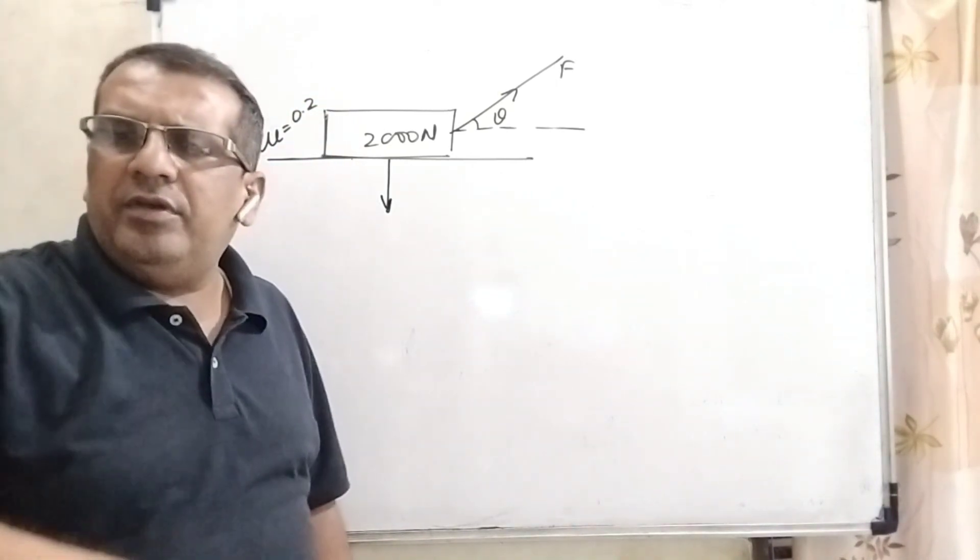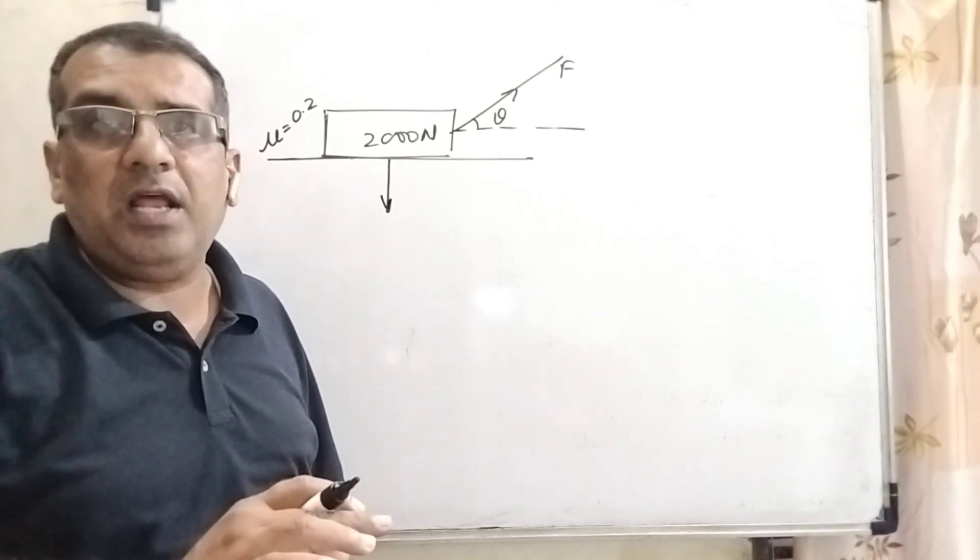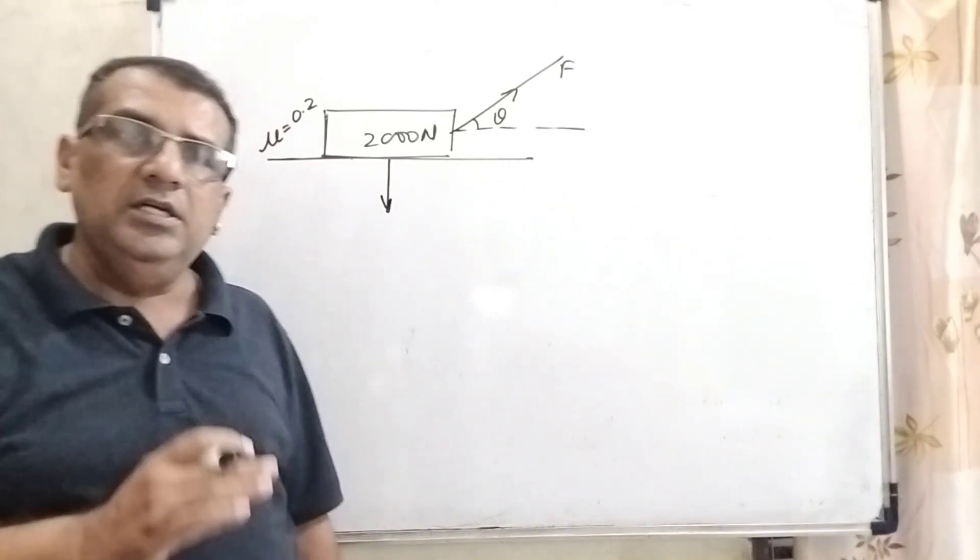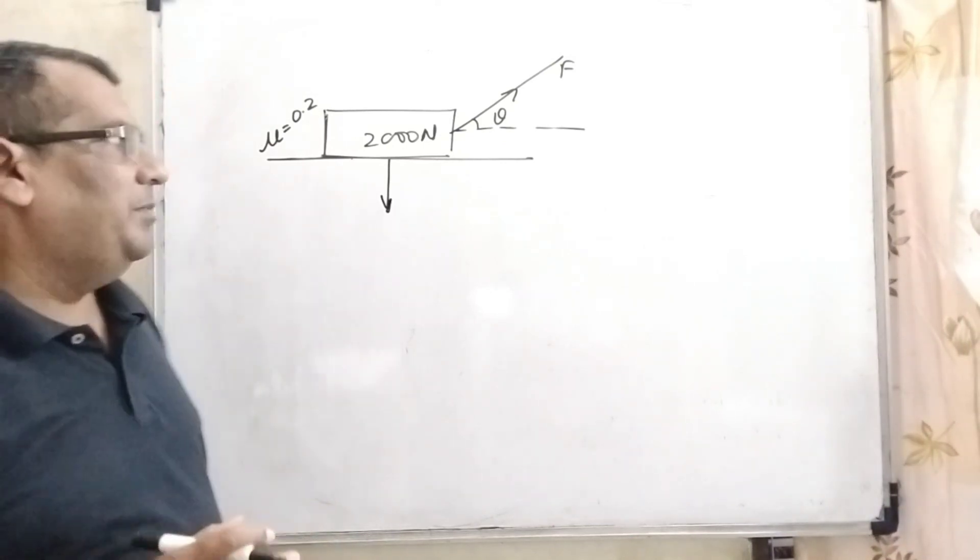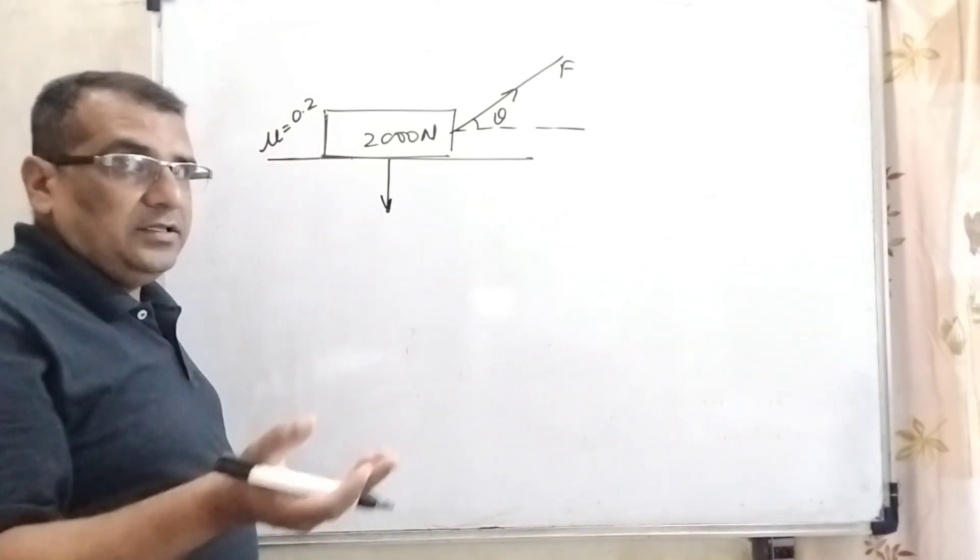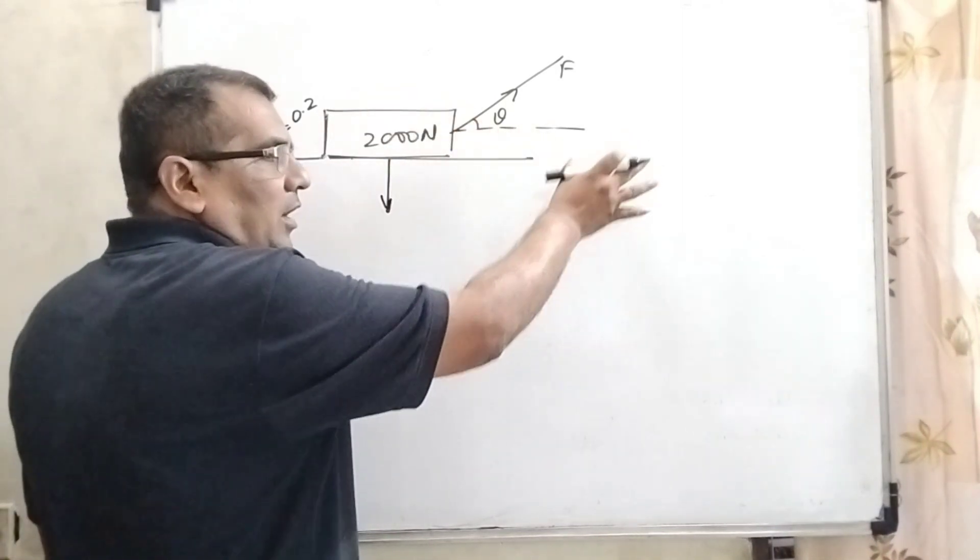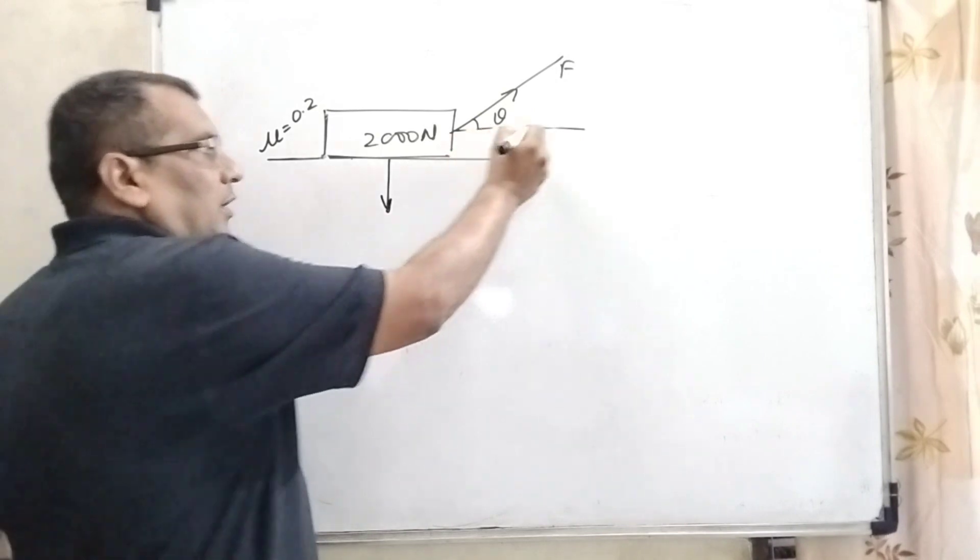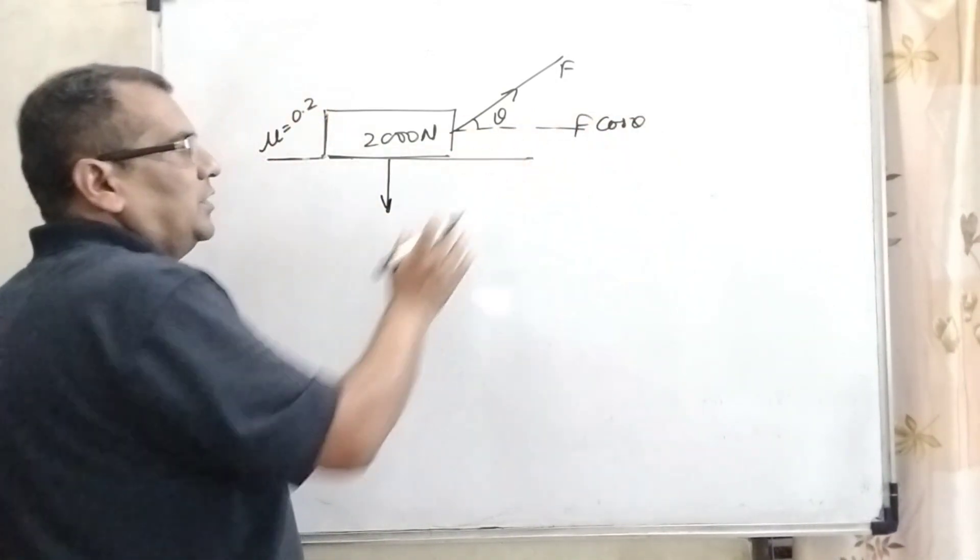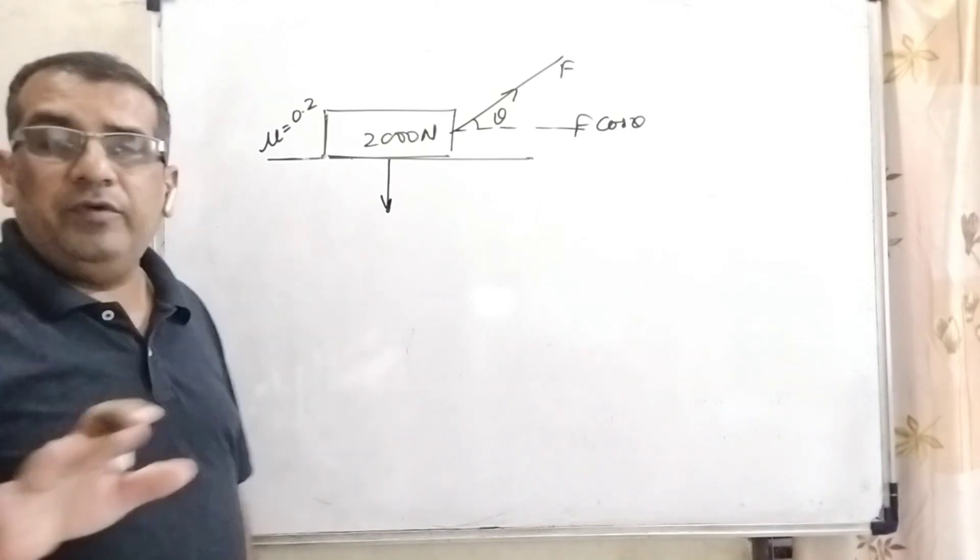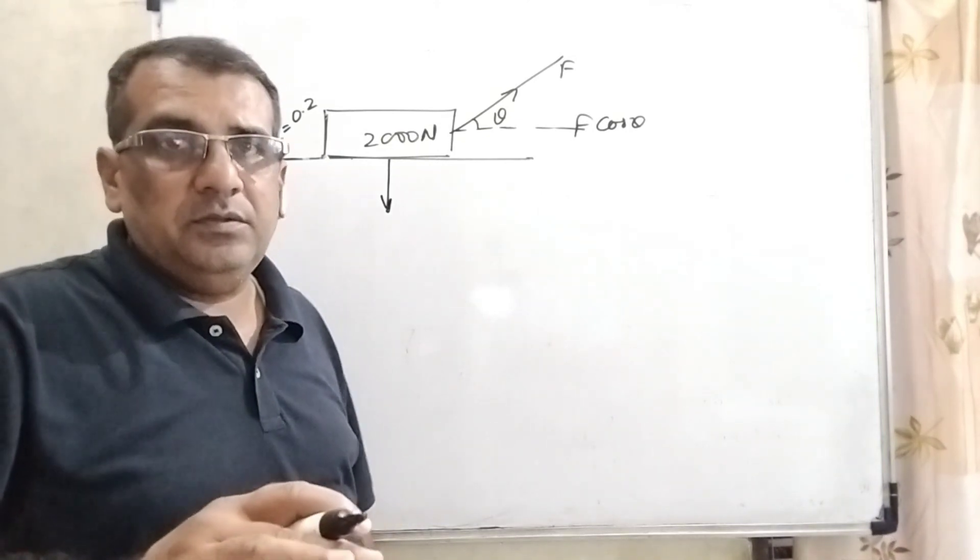In this question, we have given that the box is to be slowly slid. What does it mean slowly slide? Slowly slide means acceleration zero, or we can say in equilibrium. We can say in another words that friction force just equal to this component of right hand side force, means F cos theta equal to friction force.